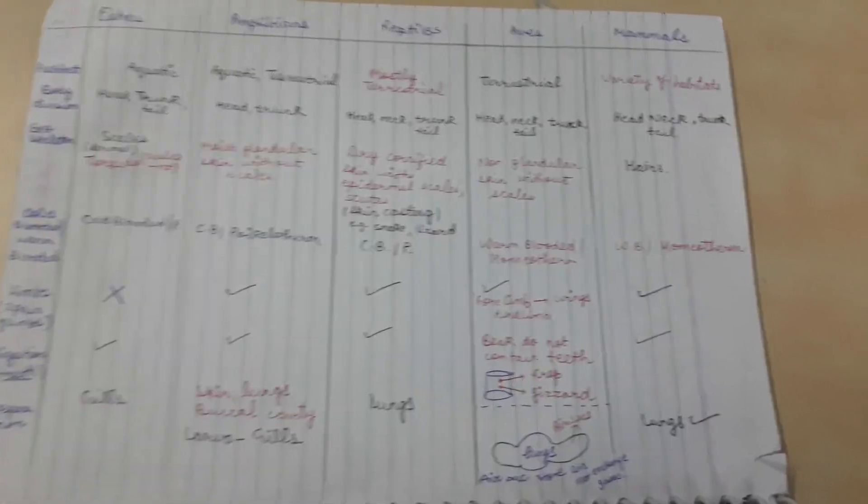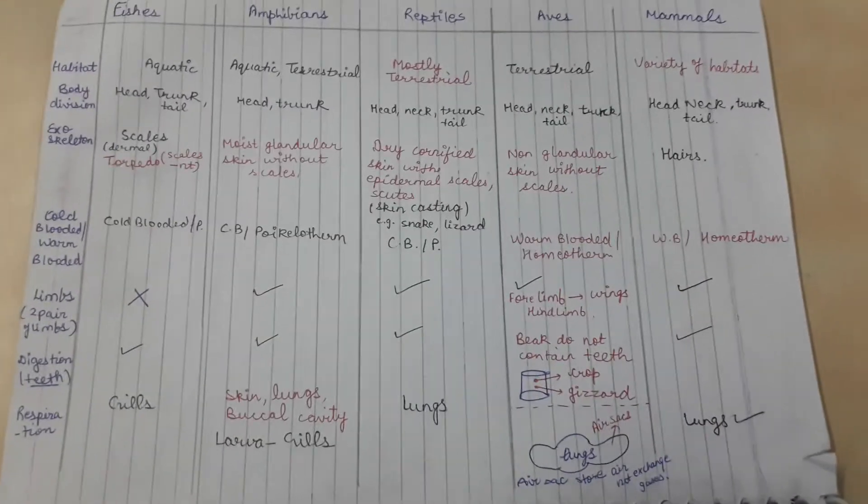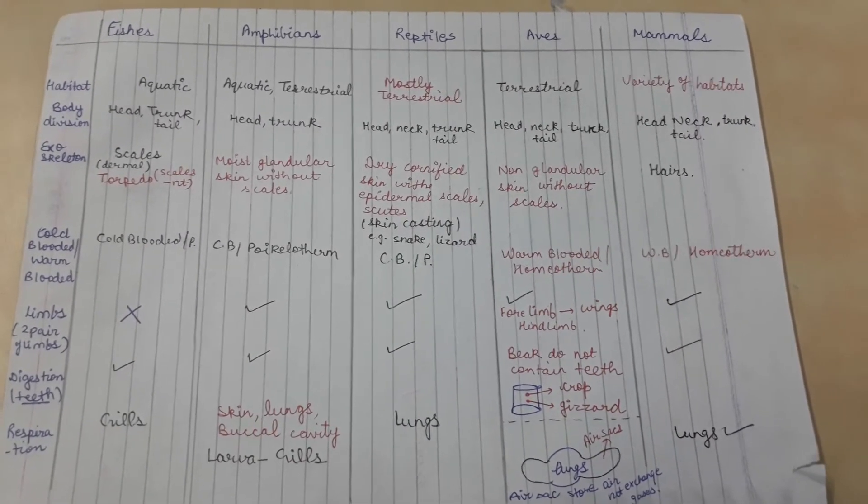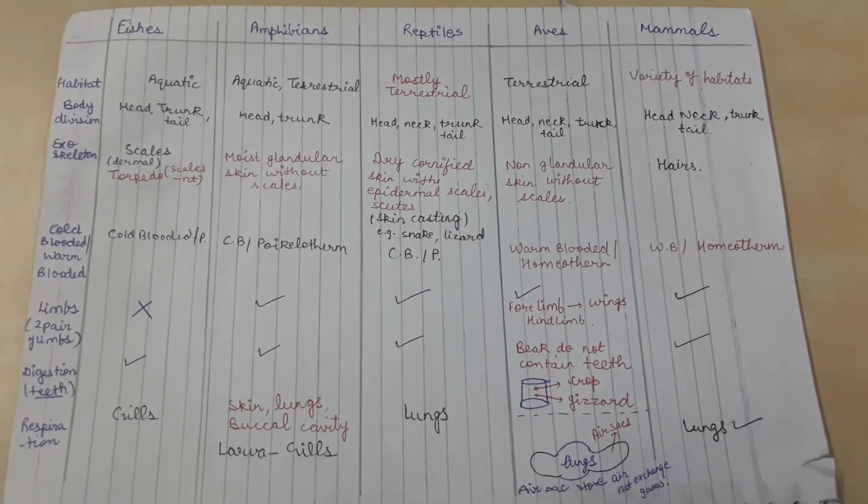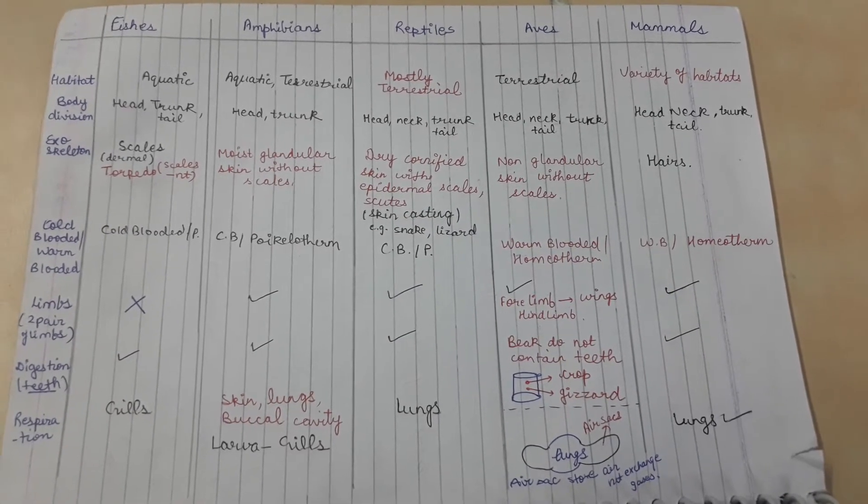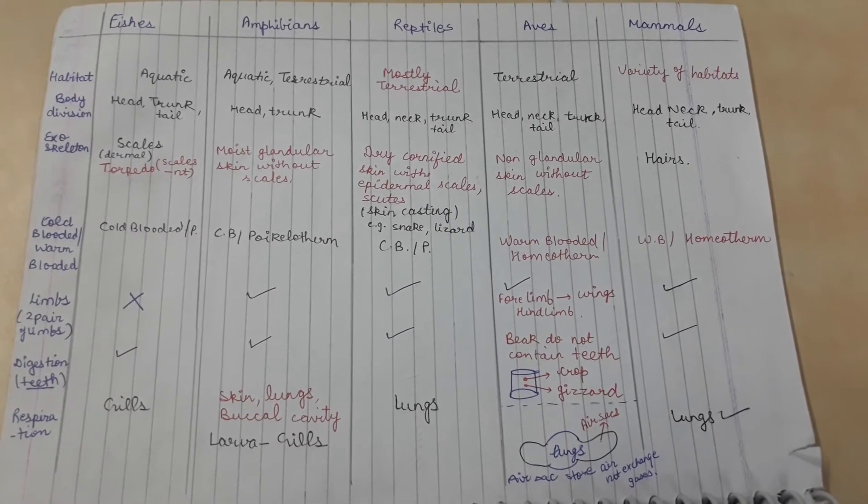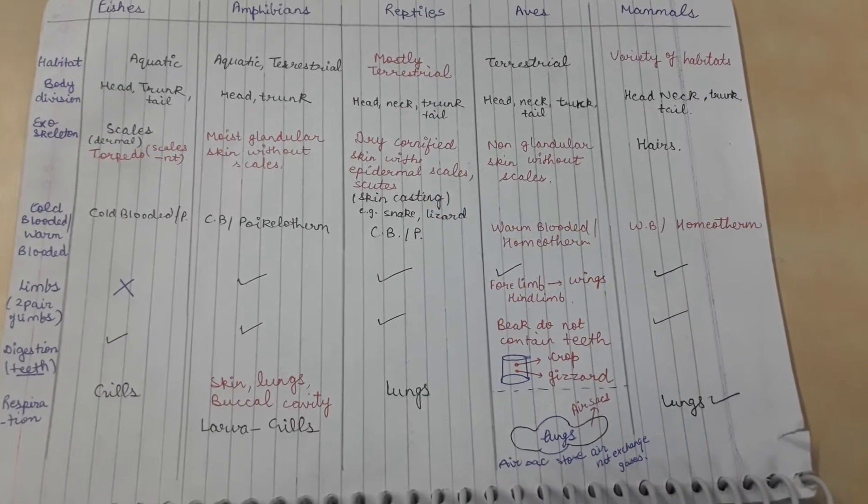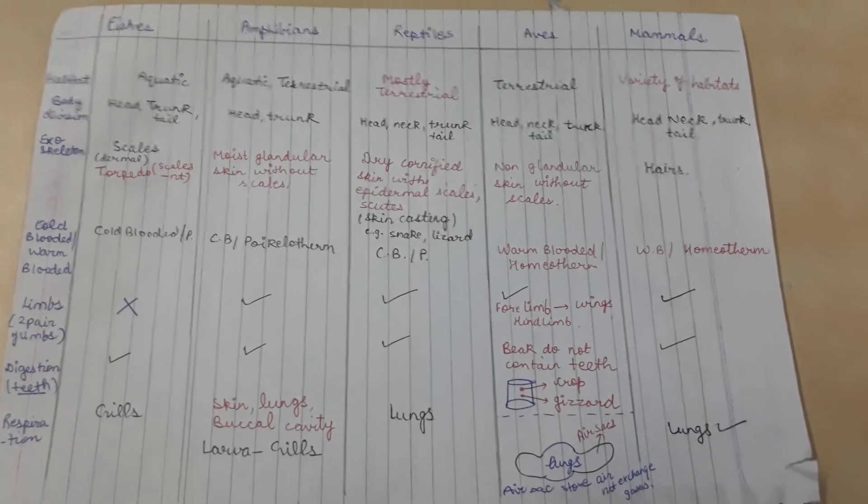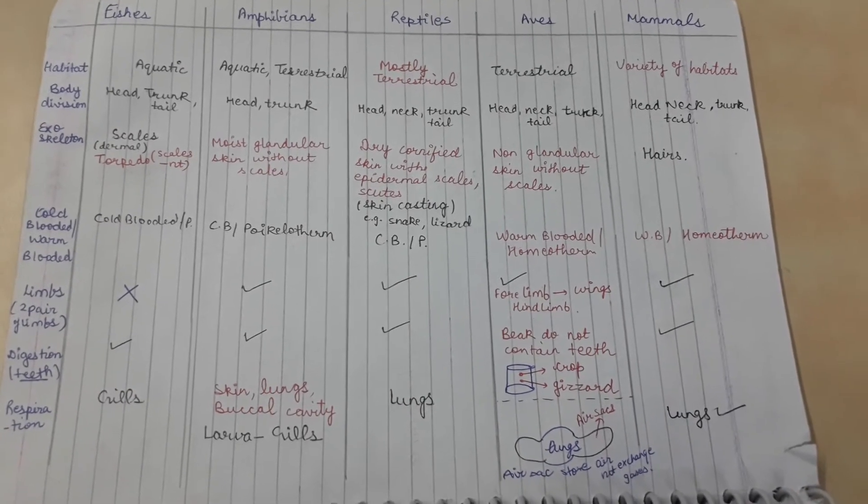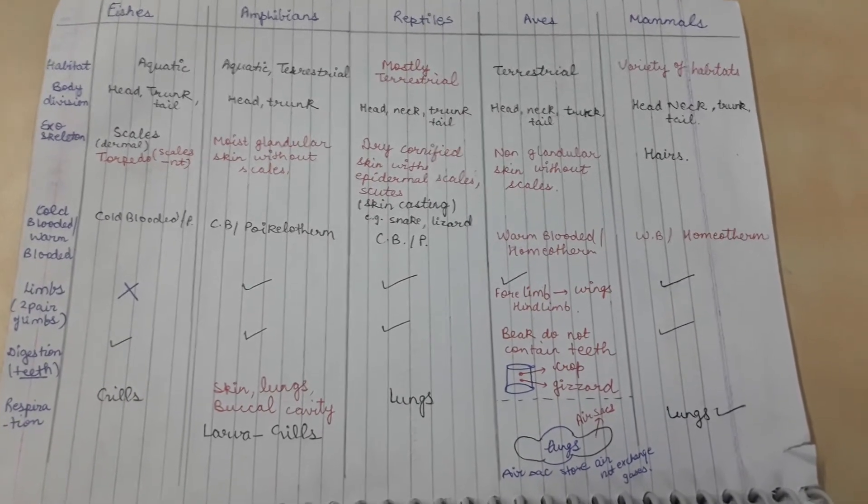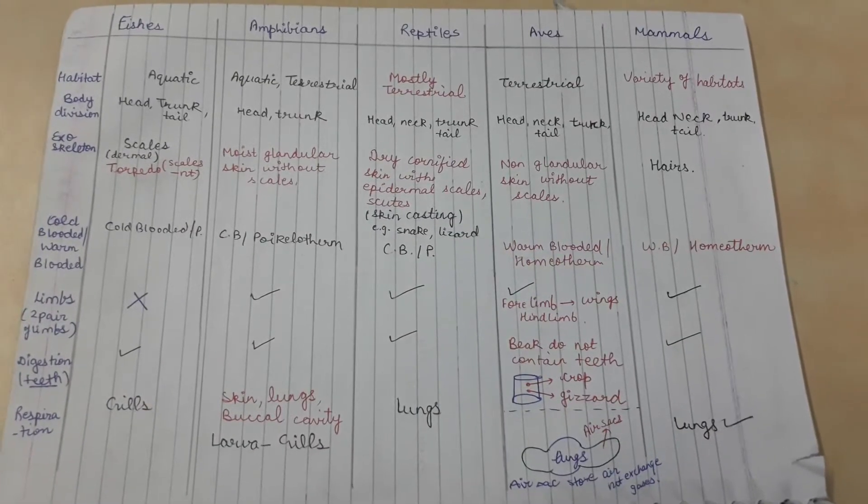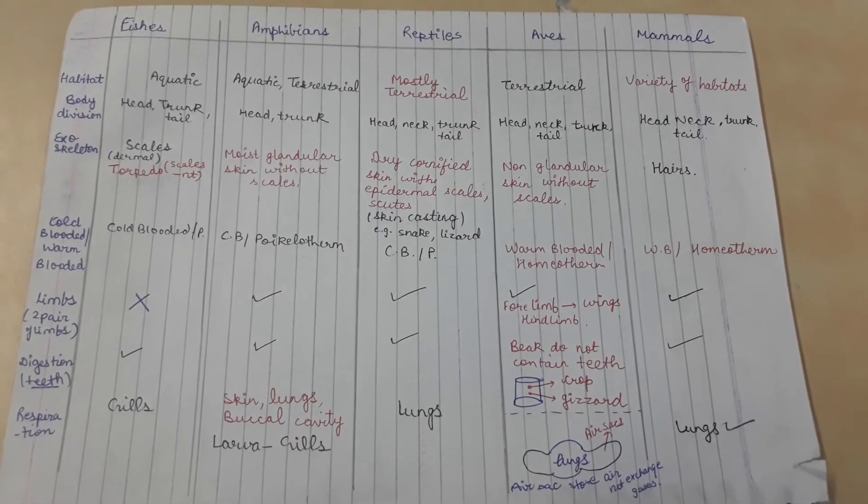Cold-blooded and warm-blooded. I hope you know what these are. Warm-blooded or homeotherms are animals which can keep their body temperature constant even if the external environment is changing. Cold-blooded cannot do so. Fishes, amphibians, and reptiles are all cold-blooded or poikilotherms.